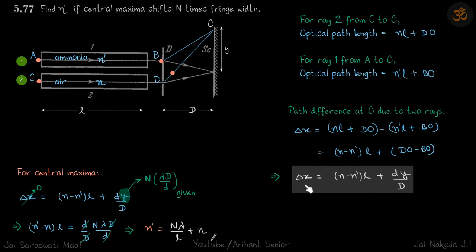So if we put the value of delta X to be zero, we get the location Y where we have the central maxima. That's what we'll do for central maxima, delta X becomes zero.